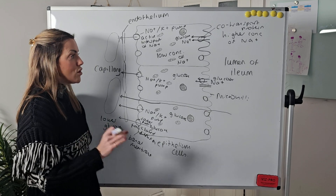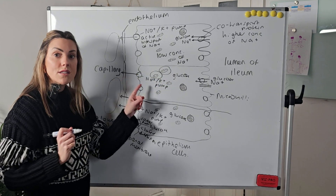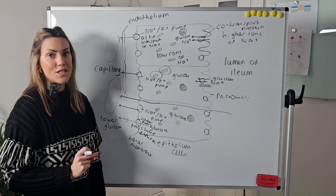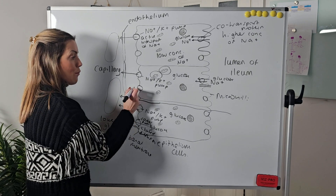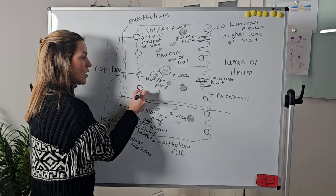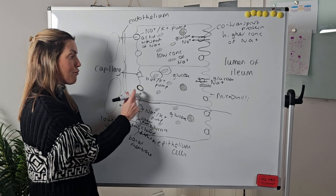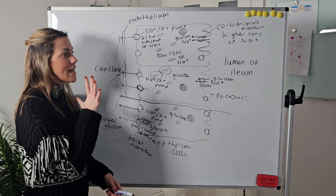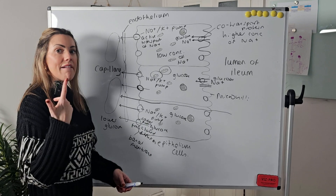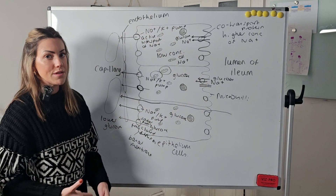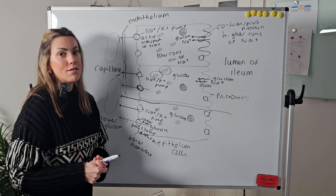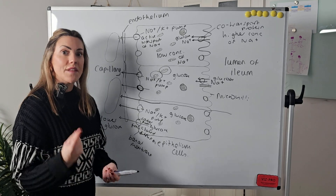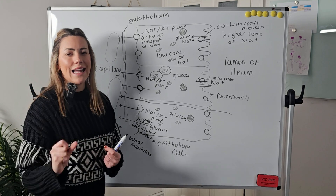They've also got lots of mitochondria to provide energy or ATP for the active transport of sodium ions out of the epithelial cell. And they've got lots of glucose transport proteins or carrier proteins for the facilitated diffusion of glucose into the blood. So they're really well adapted for absorption — whether it's surface area, mitochondria, or all the different transport proteins in large numbers. You can give any of those adaptations in the exam, and the same applies to the epithelial cells lining the proximal convoluted tubule of the kidney nephron.